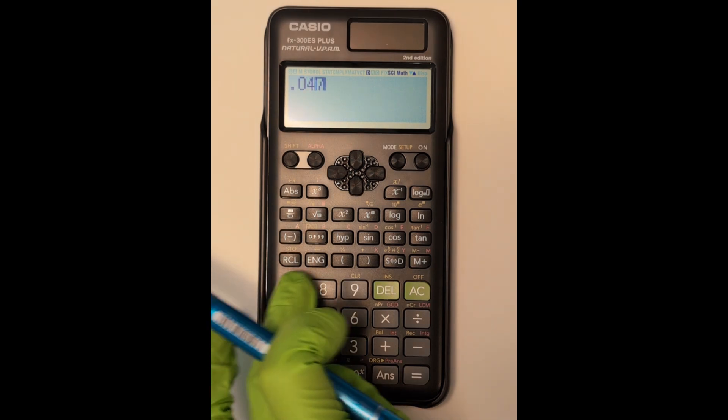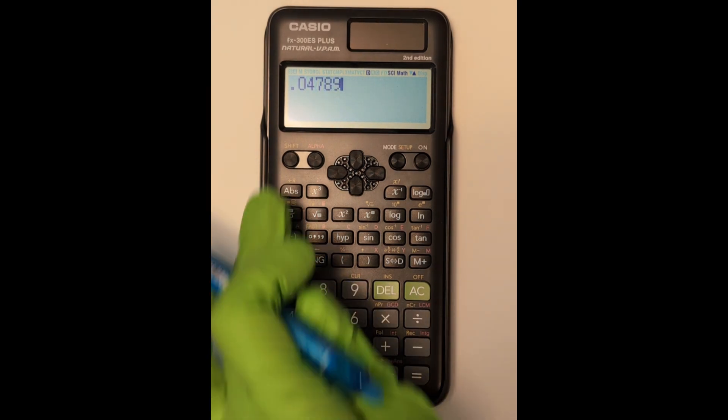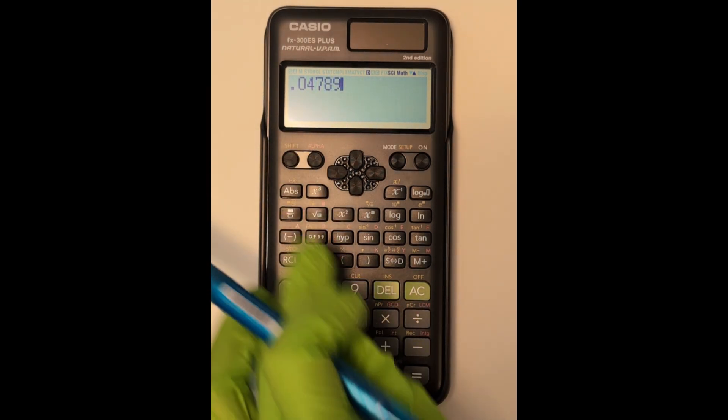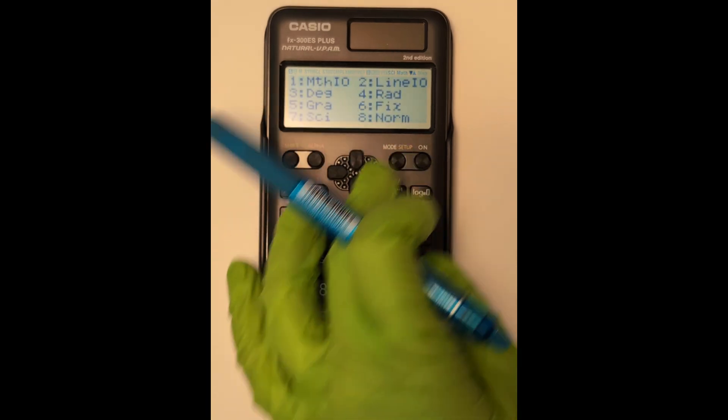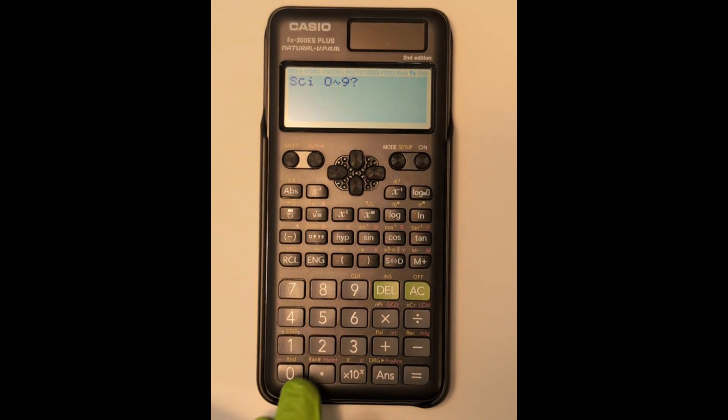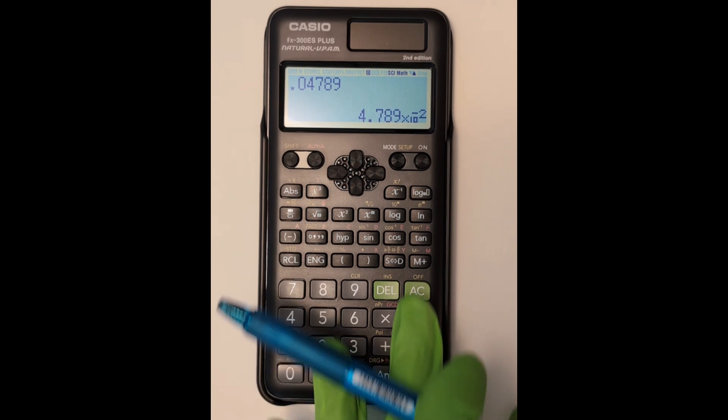Now if I enter in a different value, 0.4789, that has four sig figs. Again, I'm going to go shift mode, pick seven for scientific. In this case, I'm hitting four for four sig figs, enter, and there it gives me that same value from standard notation into the proper scientific notation.